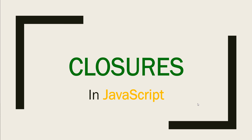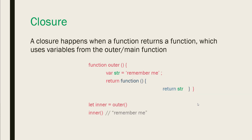A closure happens when a function returns a function which uses a variable from the outer or main function. For example, we have a function called `outer` which has a variable `str` set to the string 'remember me', and it returns an anonymous function that returns `str` — which is defined in that outer function. So a closure happens when a function returns a function.